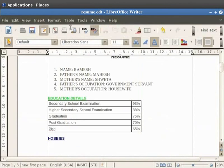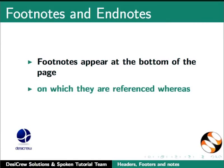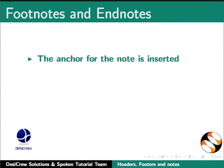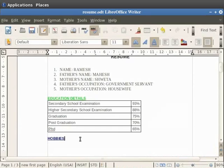Let's close this dialog box. Now let's learn about footnotes and endnotes in LibreOffice Writer. Footnotes appear at the bottom of the page on which they are referenced, whereas endnotes are collected at the end of a document. The anchor for the note is inserted at the current cursor position. You can choose between automatic numbering or a custom symbol.